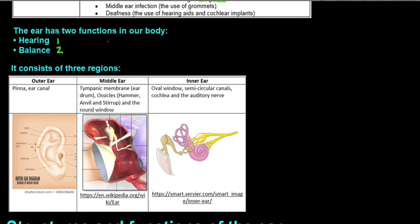The outer ear is the structure you can see from the outside. The middle ear is made up of the tympanic membrane, which is the eardrum, the ossicles — a collective name for three bones: the hammer, the anvil, and the stirrup — and then the round window. The inner ear is made up of the oval window, the semicircular canals, the cochlea, and the auditory nerve.